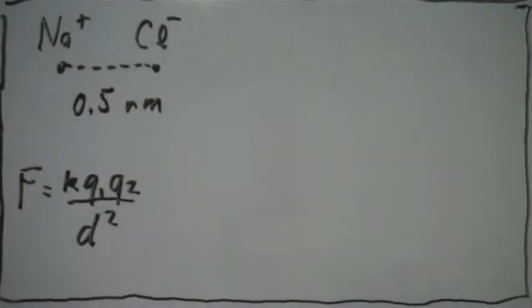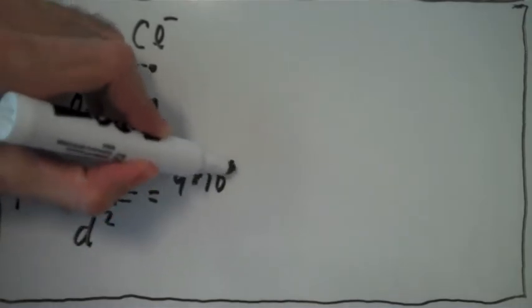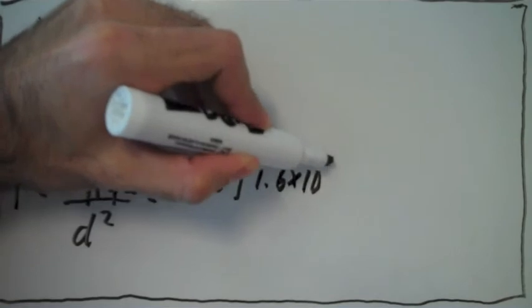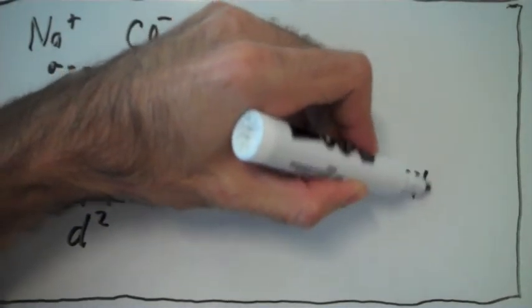So if we plug in these numbers, we get k is 9 times 10 to the 9. The charge of the first atom is 1.6 times 10 to the minus 19 coulombs. The charge of the second one is also 1.6 times 10 to the minus 19.